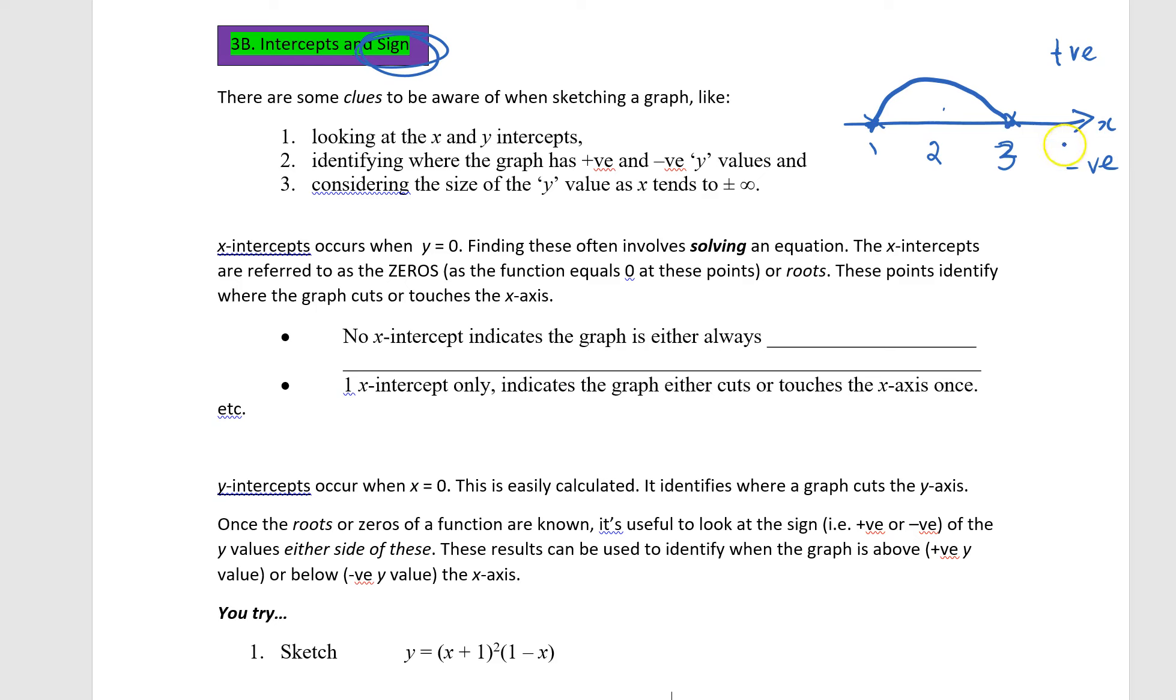If we test 4 and we get a positive value, then again the graph goes from this point back up, and it might never come back, just depending on if there were any other intercepts. So that's what this sign is.